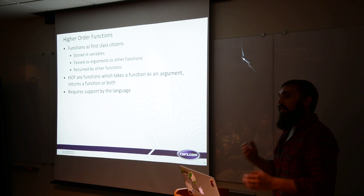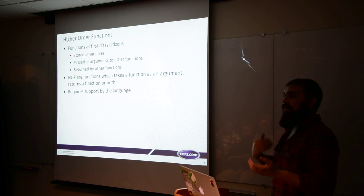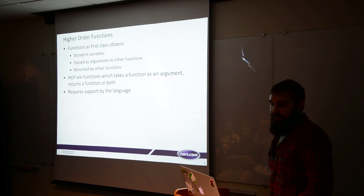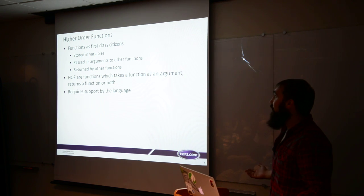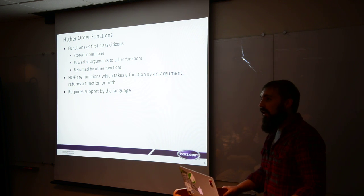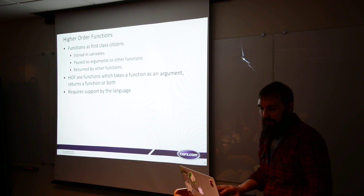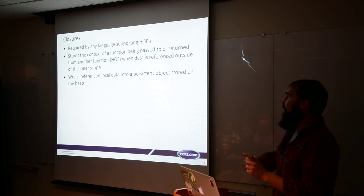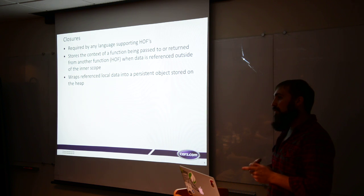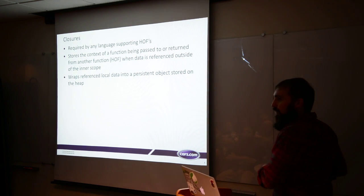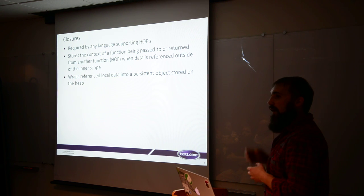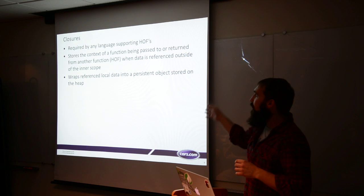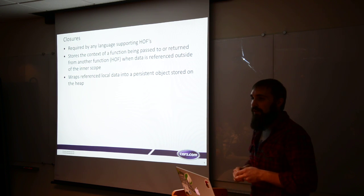Higher order functions: that's just a function that either takes another function as a parameter or returns a function as a result. To support that, the language must support functions being first class citizens — meaning they're treated like other values. You can store them in variables, pass them to functions, return them from functions. And because of higher order functions and the possibility that they might access data outside of their scope, we need closures — packaging that scope along with the function somewhere it can persist, like an object on the heap. It's not just a JavaScript thing; any language with higher order functions needs closures.